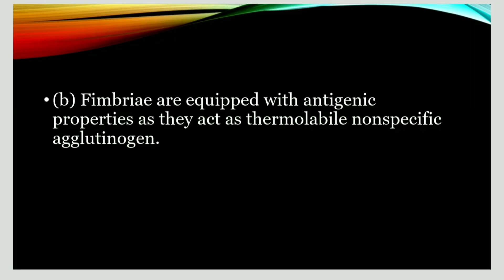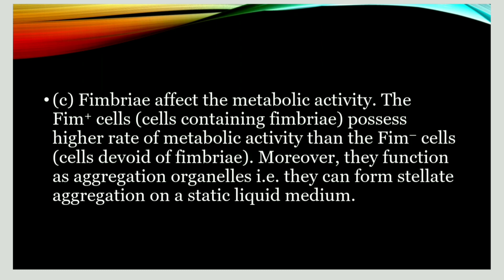Fimbriae are antigenic — they are substances that can stimulate the production of antibodies. They are antigenic because they are thermolabile and non-specific agglutinogen. Fimbriae also affect metabolic activity: cells that have fimbriae are known as Fim-plus and those that do not are Fim-minus. Fim-plus cells have a higher rate of metabolism than Fim-minus cells.